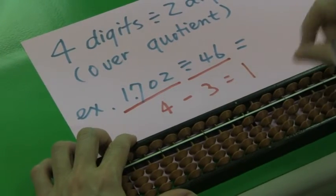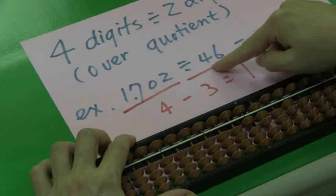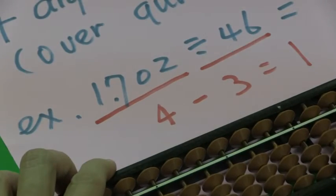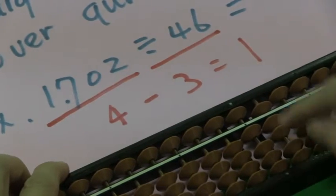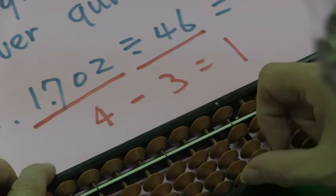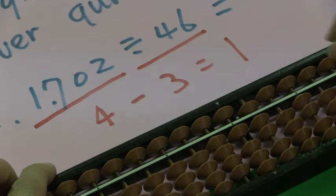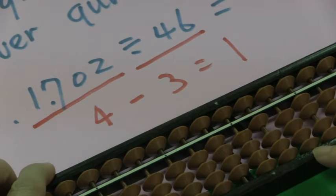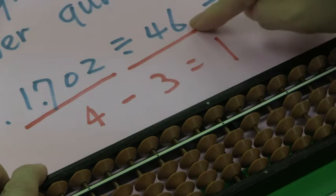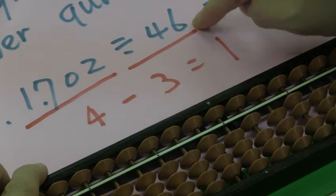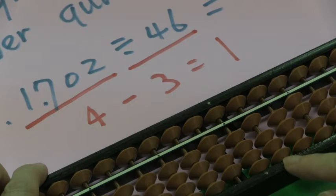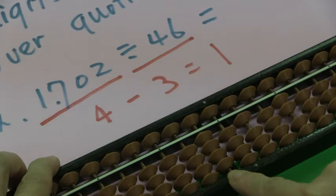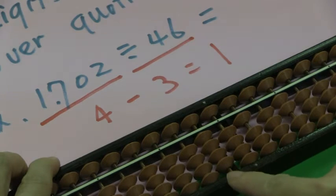1,702 divided by 4. Here, 17 divided by 4. We know the quotient is 4. 4 times 4 is 16. The remainder is 10. Then 4 times 6, 24. Here, the remainder is not enough. We call this over-quotient. The quotient is too big.